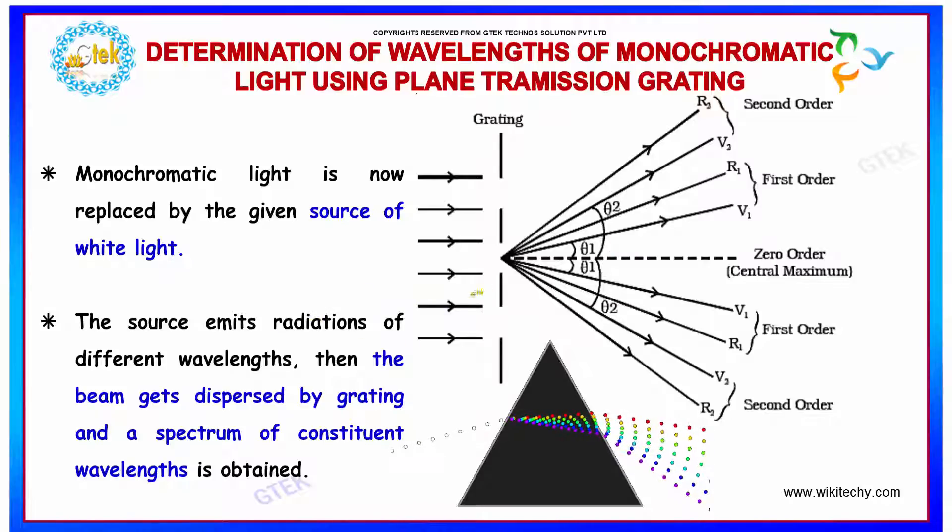The source emits radiation of different wavelengths and the beam gets dispersed by grating and a spectrum of constituent wavelengths is produced.